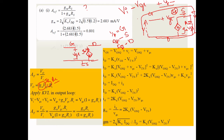After substituting and simplifying — cancelling VGS terms — you finally get: AVF = GM·RS / (1 + GM·RS). This is the transfer function obtained for the circuit, and this is the formula you have to use.